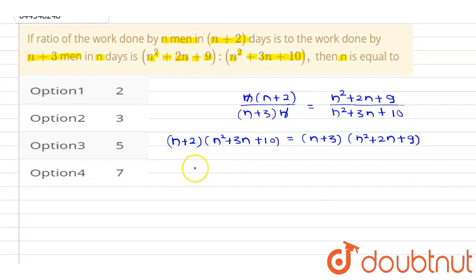Multiply: this will be n³+3n²+10n+2n²+6n+20, and this is equal to... So the right-hand side will be n³+2n²